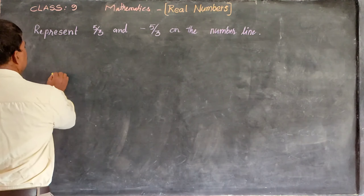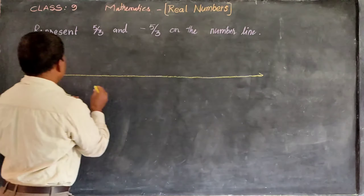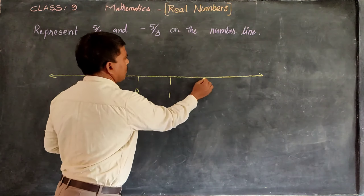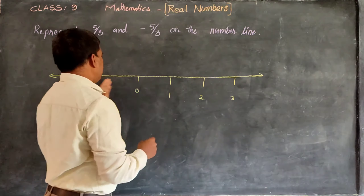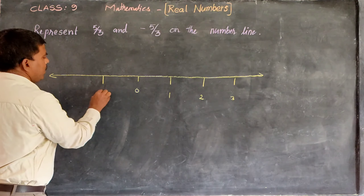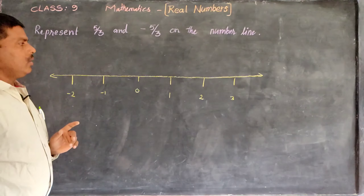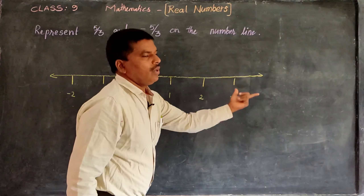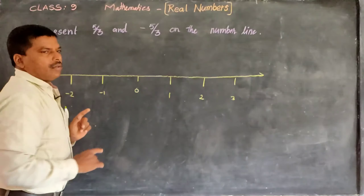First of all, draw the number line. Here is 0, this is 1, this is 2 and 3. Similarly, on this side: minus 1, minus 2, and so on. So from here: 1, 2, 3, 4, and on the negative side: minus 1, minus 2, minus 3, minus 4. This is the number line.